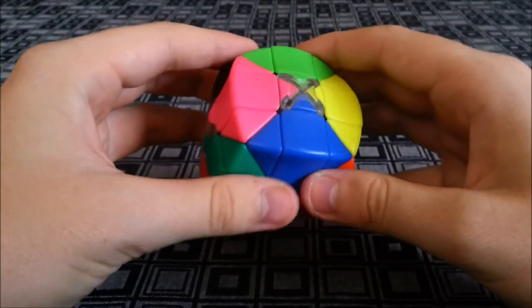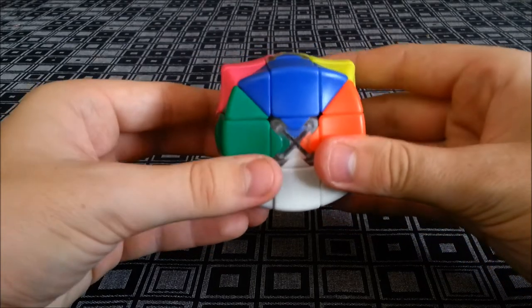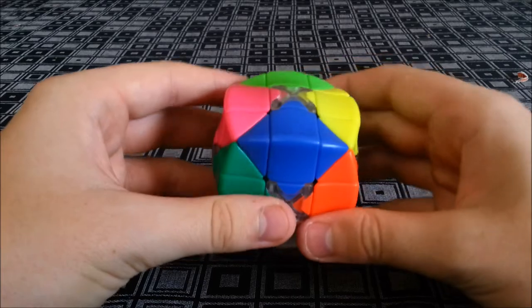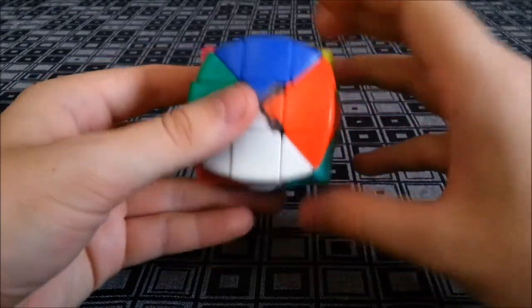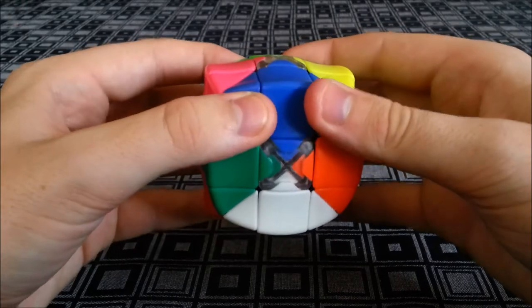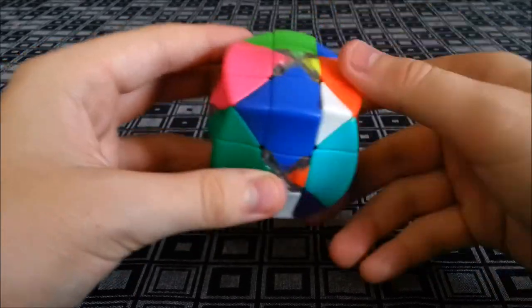The only non-speedcubing puzzles I've felt that have this kind of turning are method puzzles. Method puzzles tend to turn really well but this was unexpected. I broke it in a little to get rid of the scratchy feel, then I added two or three drops of Maru and now it feels really nice.